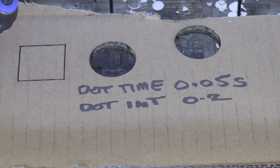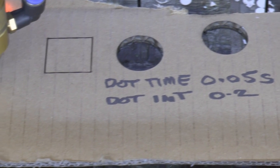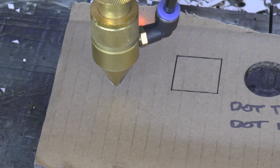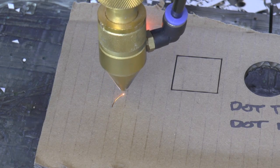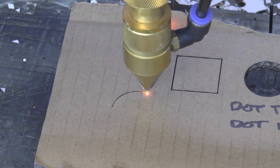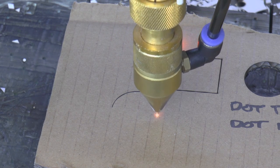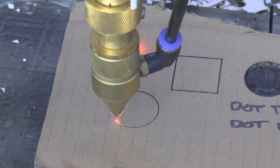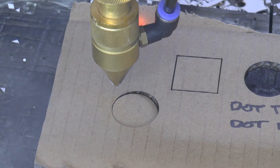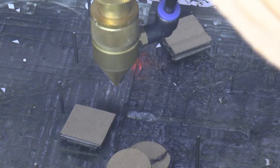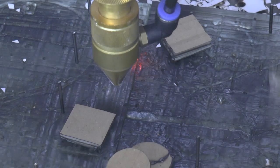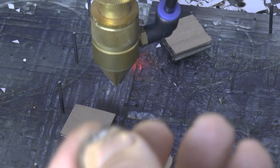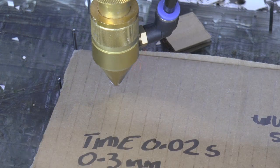You'll see the dot interval is 0.2 millimeters. We've changed the dotting interval to 0.3, so we should have basically a 50% speed increase. We've still got a burn towards the end of the cut there.